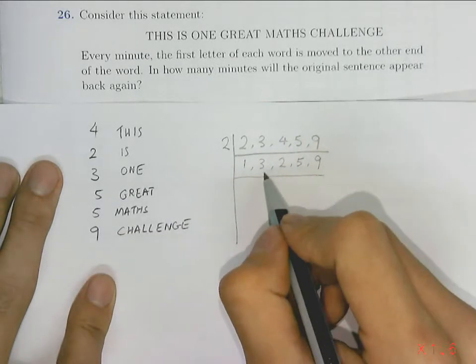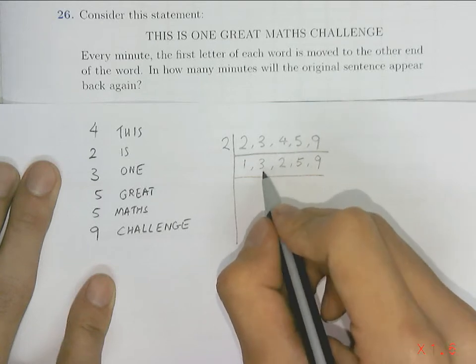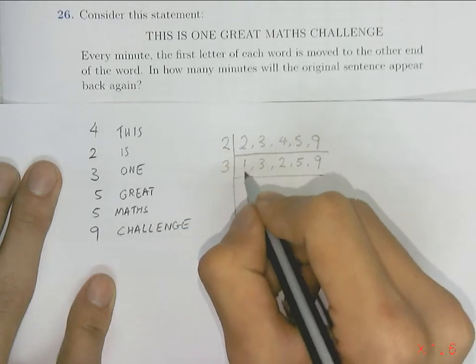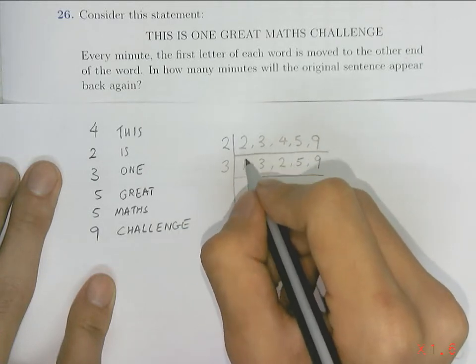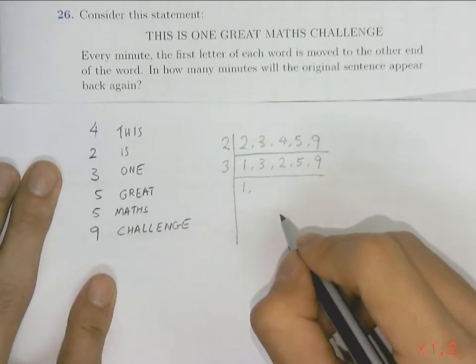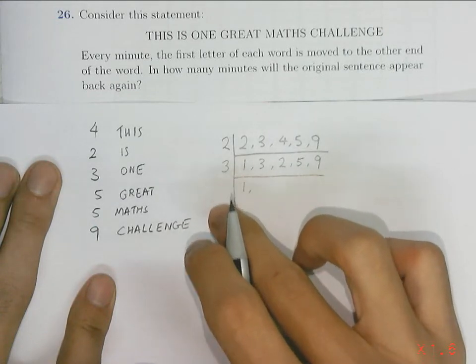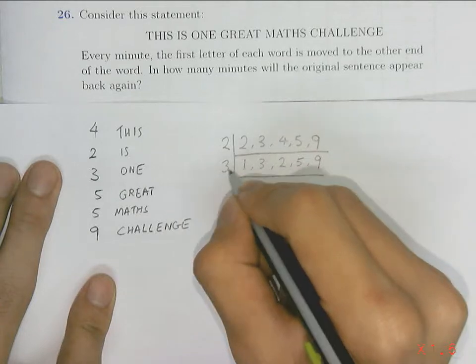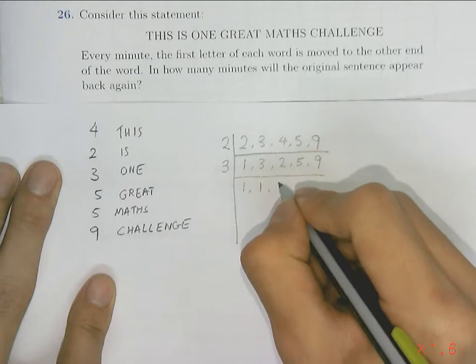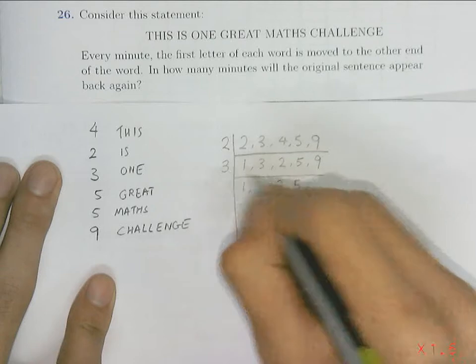Now notice that there is a common factor between three and nine which is three, so I just divide by three. If the number stays already as one, we just keep it as one. The aim is to achieve that all five numbers will equal one after division. So three divided by three is one, two is not divisible by three just leave it as two, five not divisible by three just leave it as five, and nine divided by three will give me three.